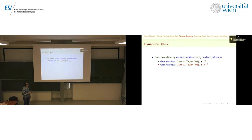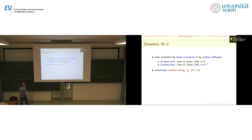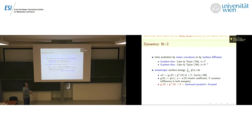Motion by mean curvature corresponds to the L^2 gradient flow of the energy, and surface diffusion corresponds to the H^{-1} gradient flow. The main problem is that if the surface energy is too anisotropic — specifically if g(theta) + g''(theta) is negative, where theta is the angle the normal forms with the x-axis — the evolution equation becomes backward parabolic and is ill-posed.